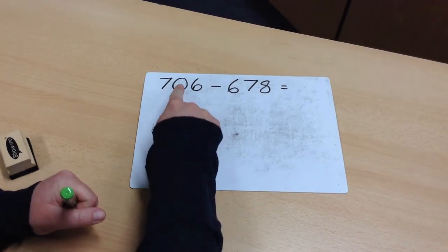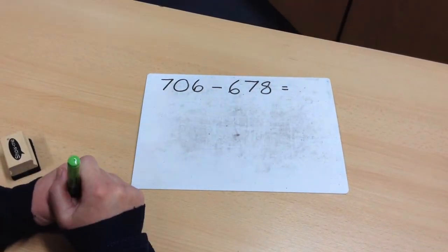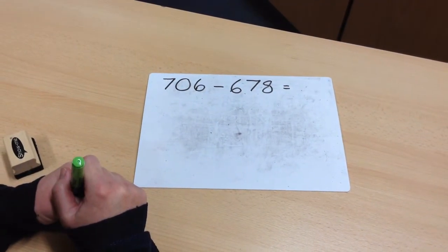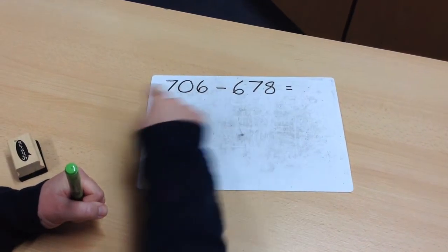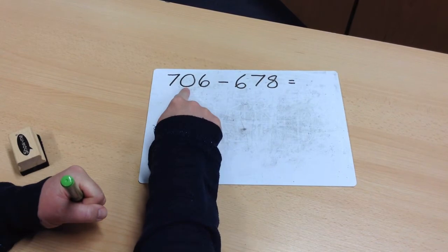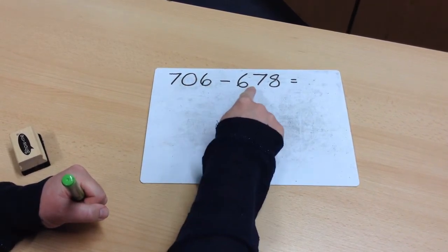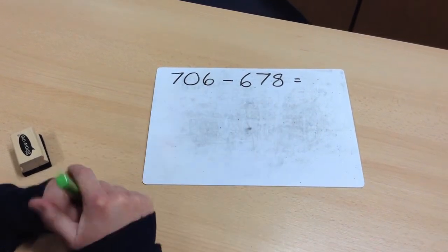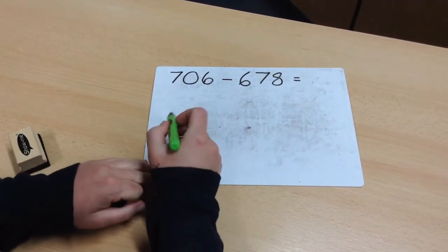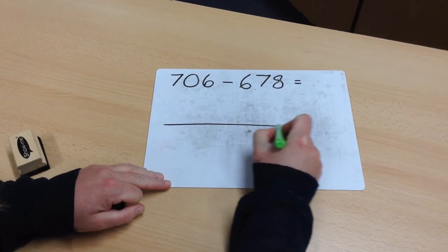We find the difference when the two numbers in the calculation are close together. Can you remember the song we learned about what we call these two numbers? This number here is the minuend and then we subtract the subtrahend. The minuend and the subtrahend are fairly close together, so I'm going to find the difference by using a number line.